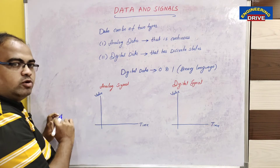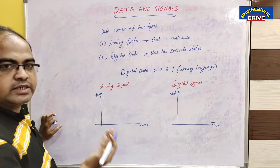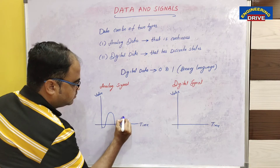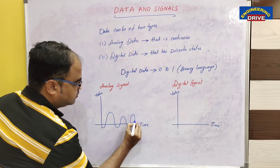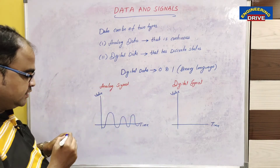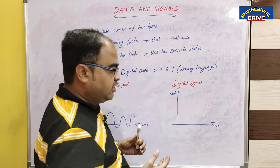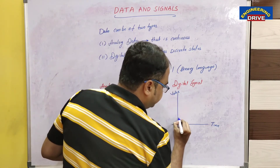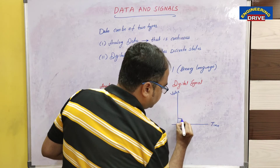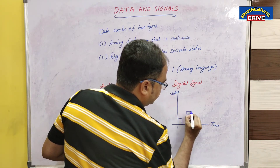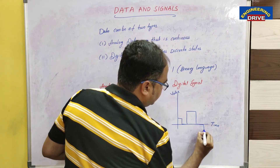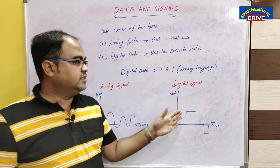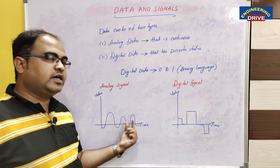Now what about the analog signal? How will it look? Analog signal is continuous, so you will get a continuous wave. This is the analog signal. Whereas digital signal is in binary form — zeros and ones — and it has discrete states. So digital signal will look like distinct discrete states. Different states will be there for digital signal, whereas analog signal will have continuous states.